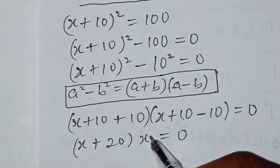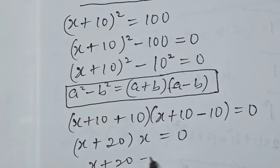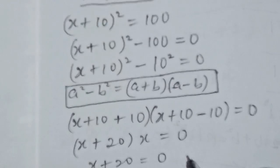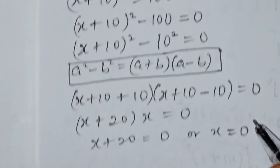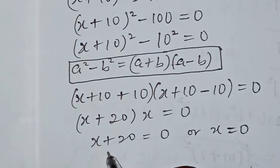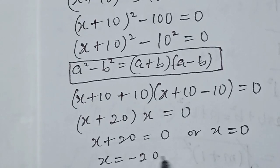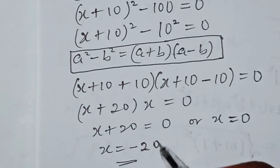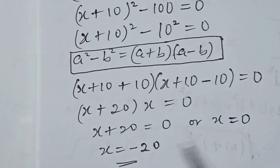We can now solve for x. This means x + 20 = 0 or x = 0, so the solutions are x = −20 or x = 0. The value of x for the second method gives us x = 0 and x = −20.